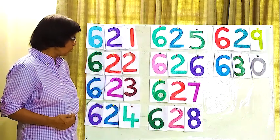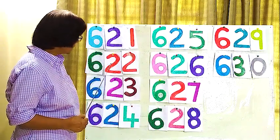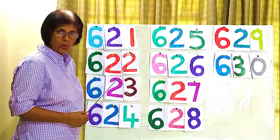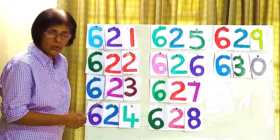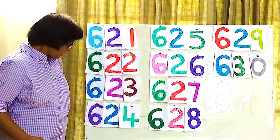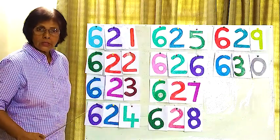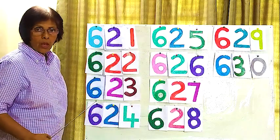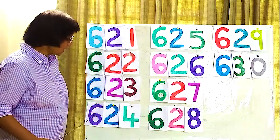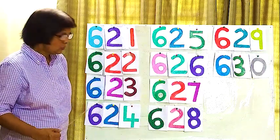Now this is how we are writing 622. 622, 622, 622. This one 624. This is how we are writing 624. 624, 624.